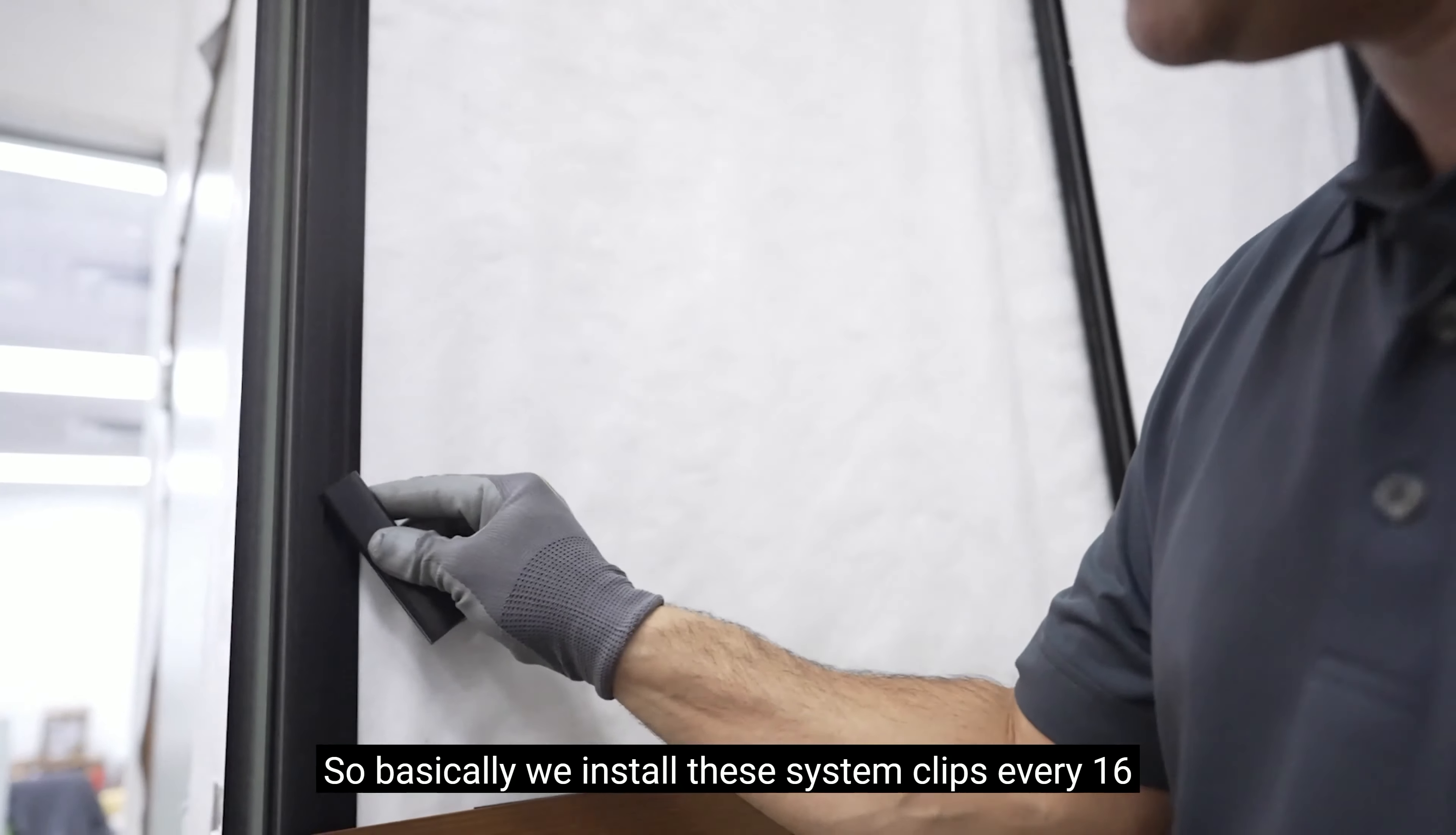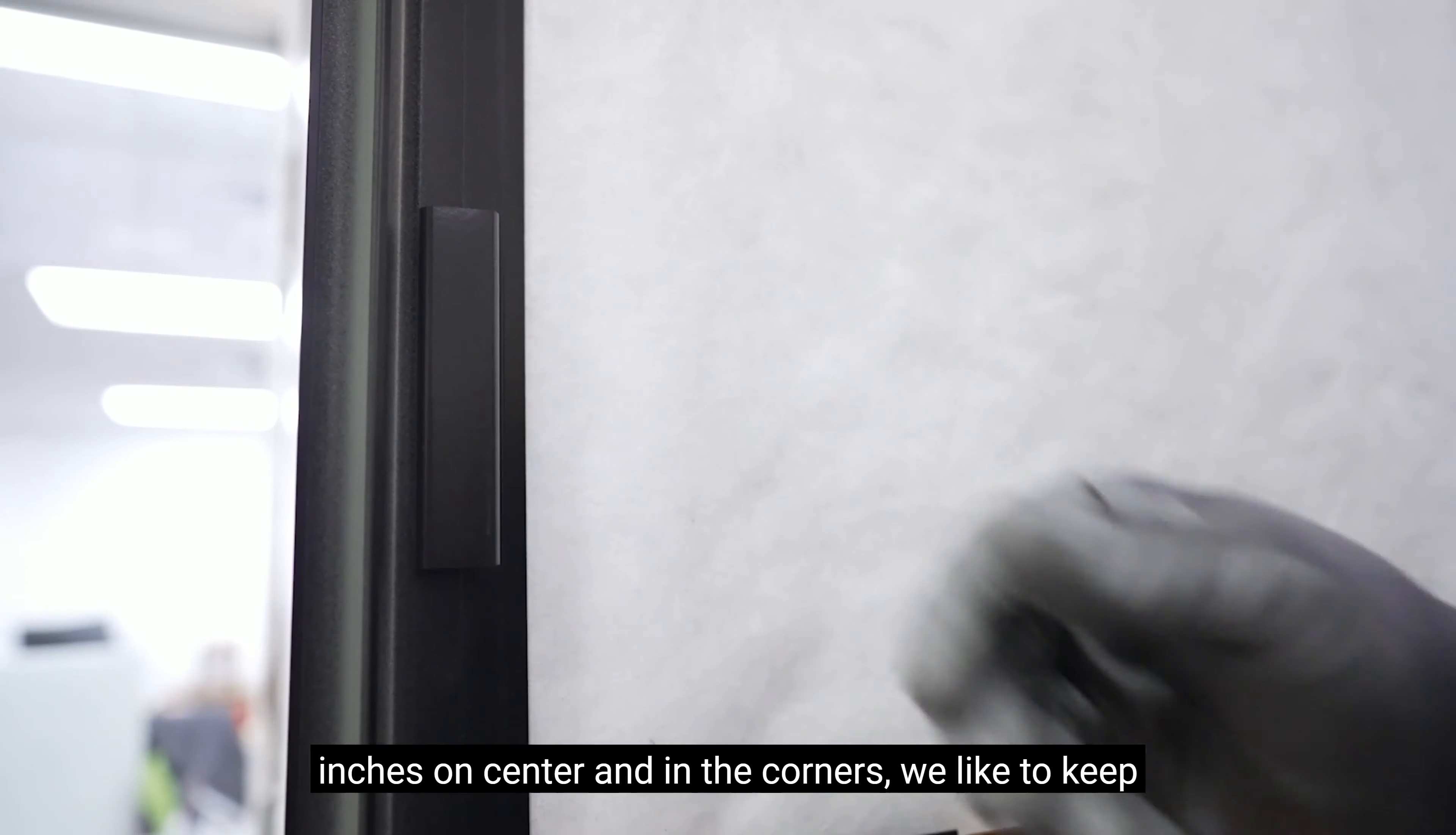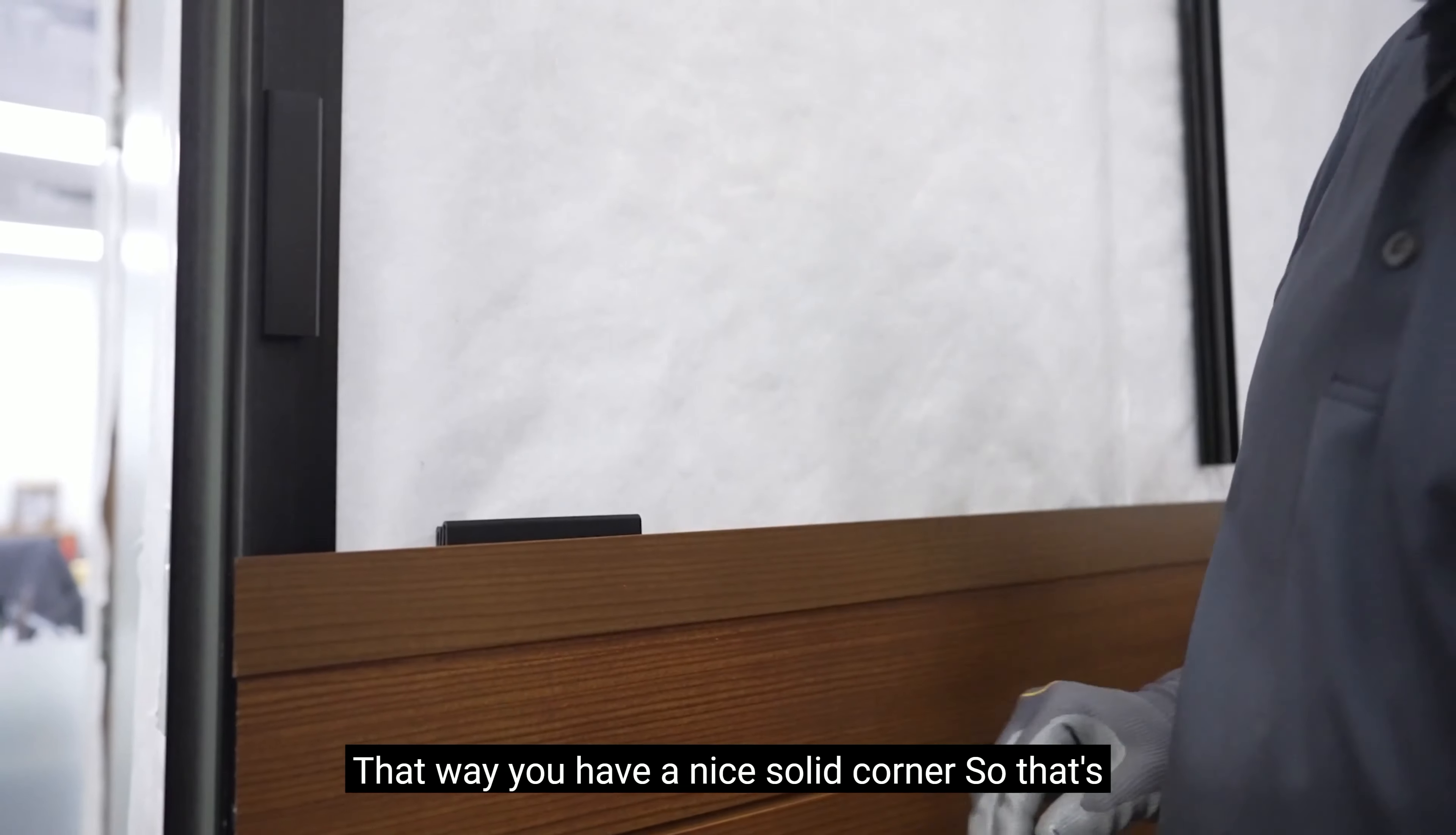Basically we install these system clips every 16 inches on center and in the corners we like to keep them three and a half, four inches, five inches apart. That way you have a nice solid corner.